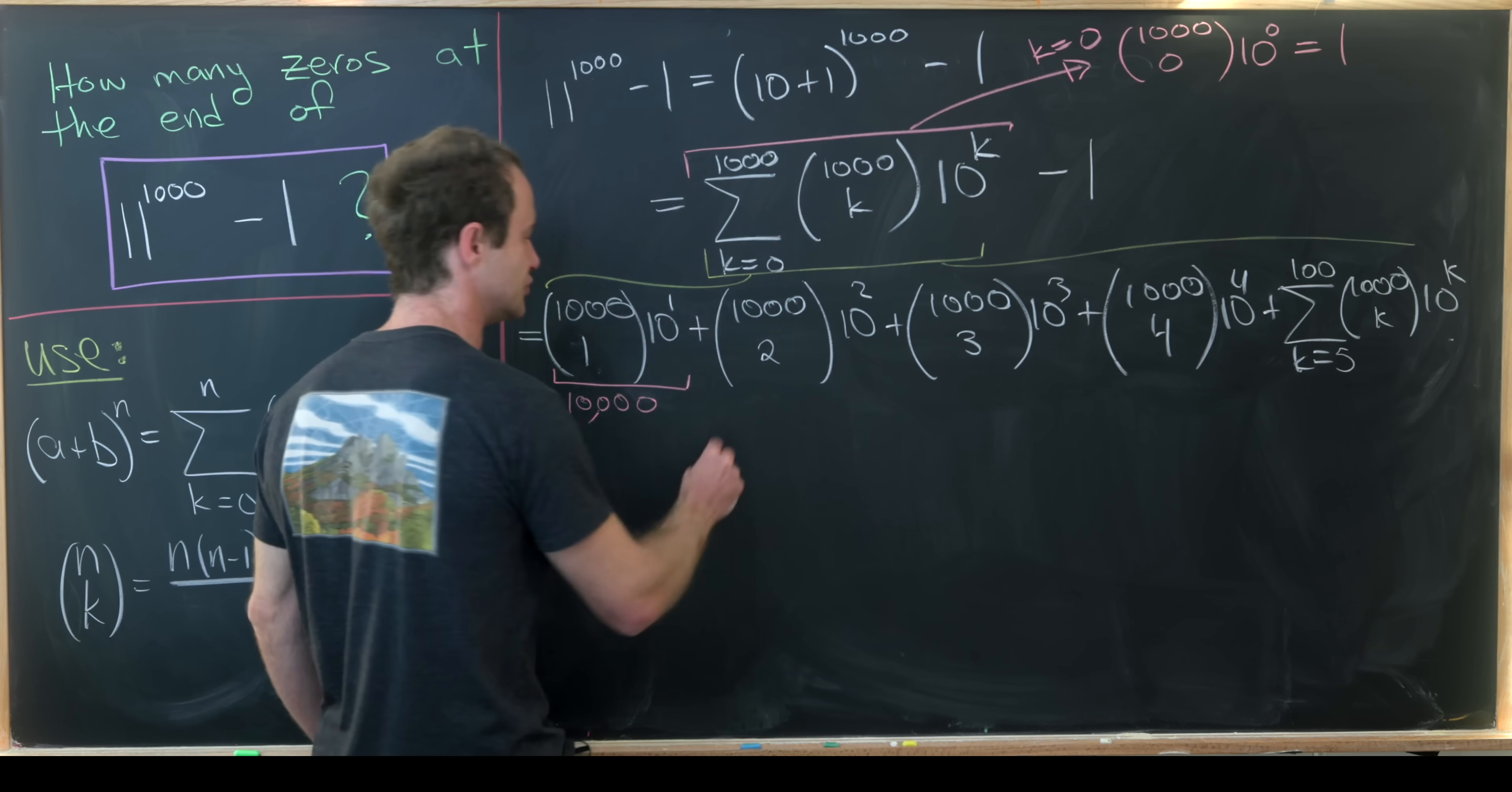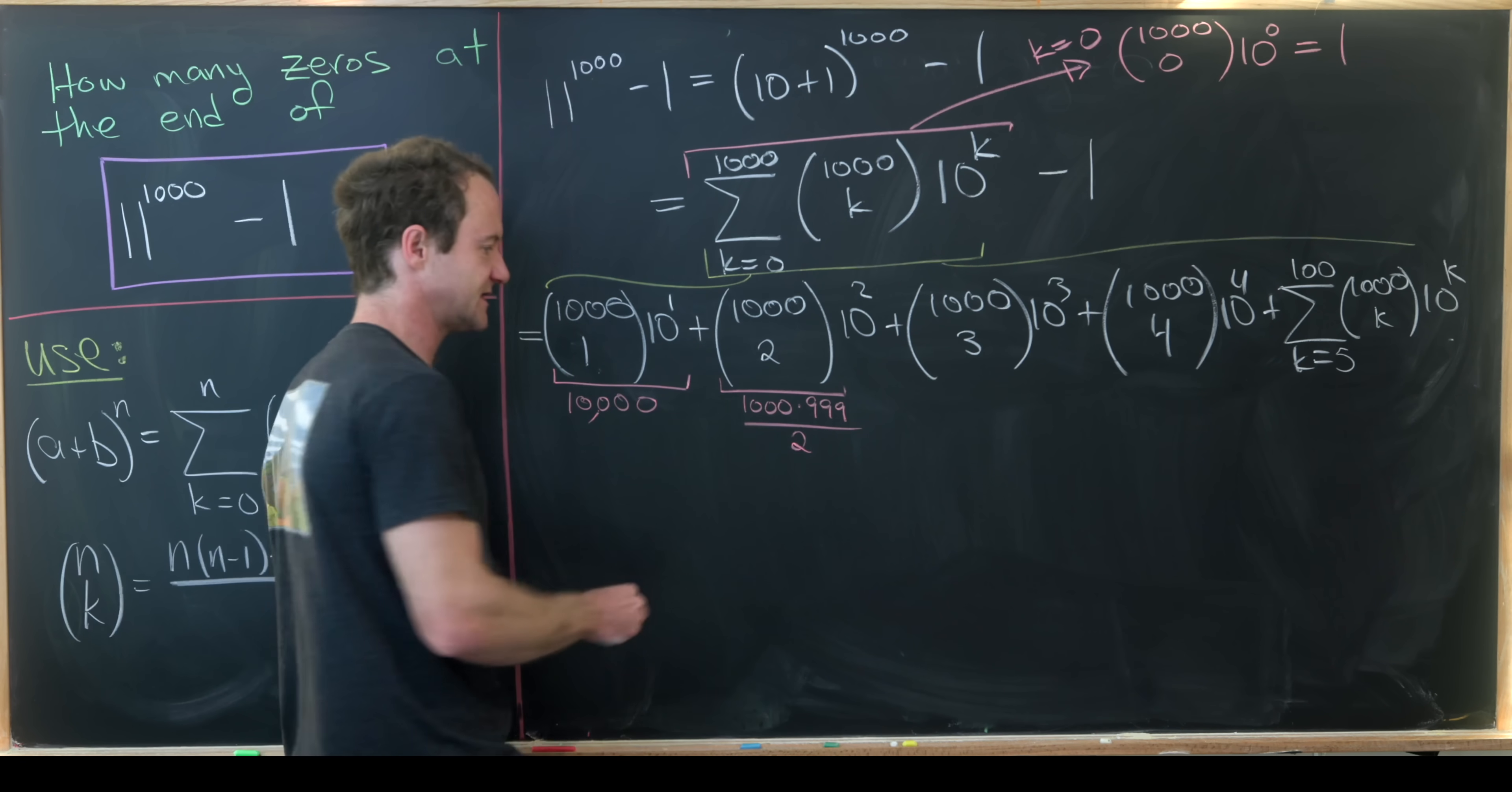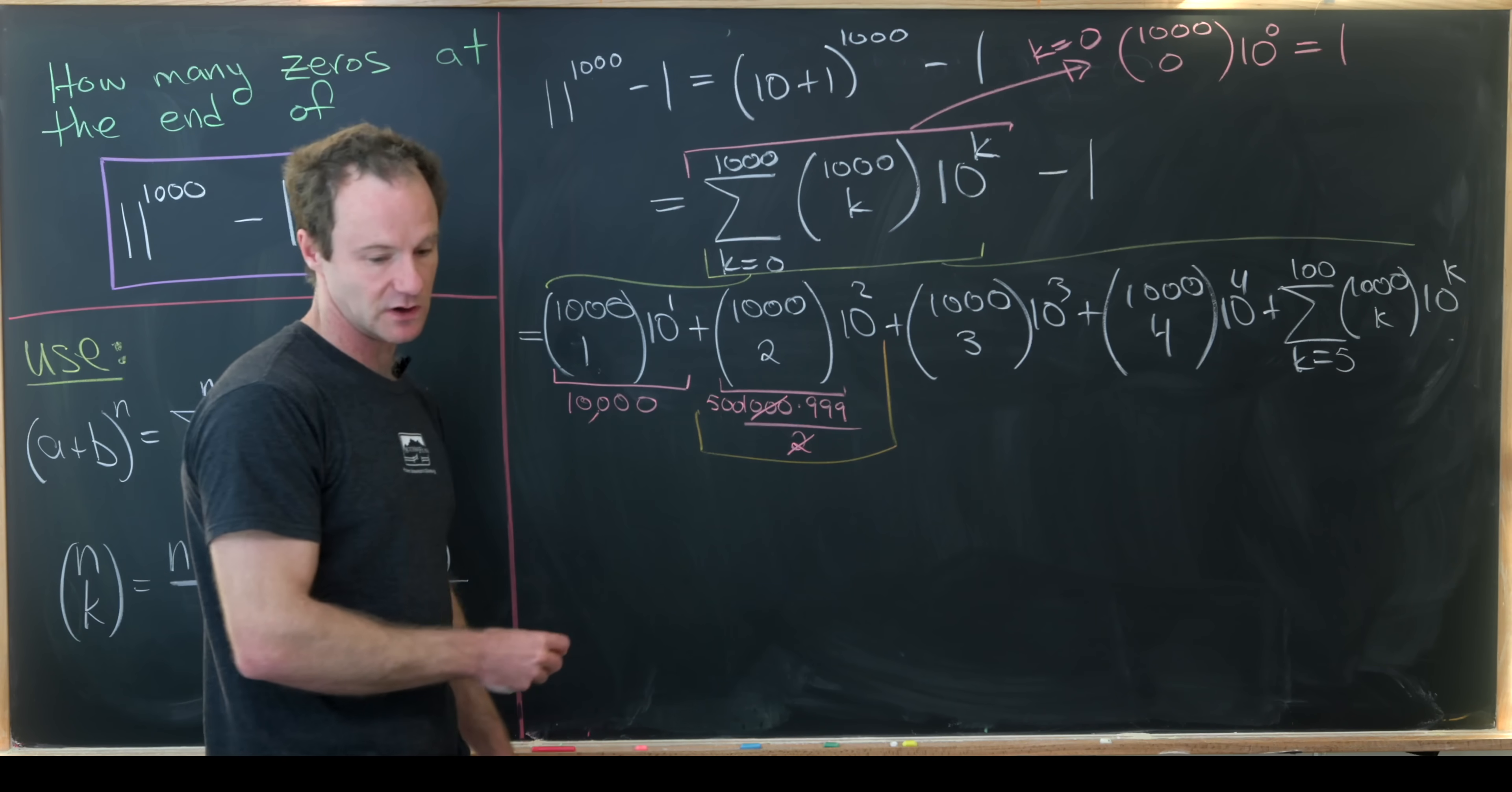Now what about 1,000 choose 2? So 1,000 choose 2 will be 1,000 times 999 over 2 factorial, but over 2 factorial is just 2. Okay but notice that this 2 will cancel this 1,000 down to a 500, but then when we combine this 500 with 10 squared we'll see that we'll have some number that ends in four zeros.